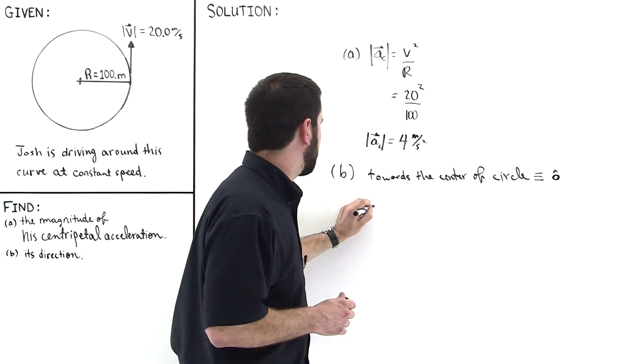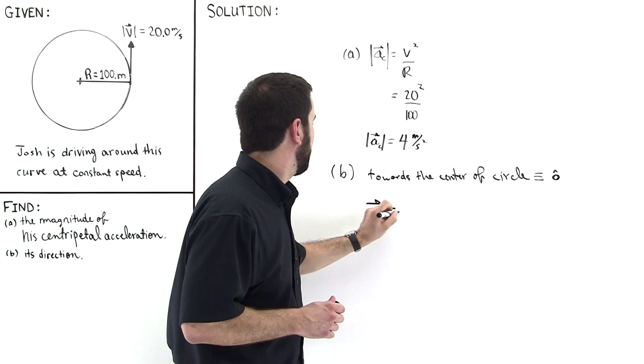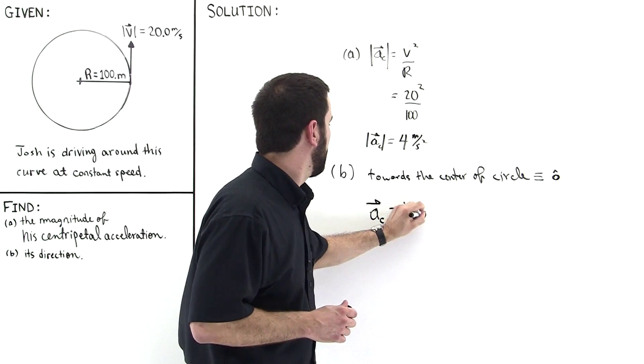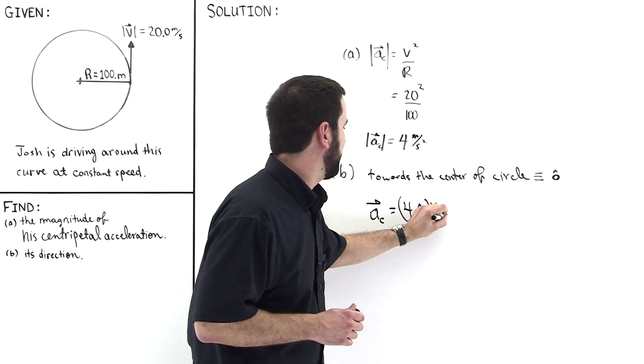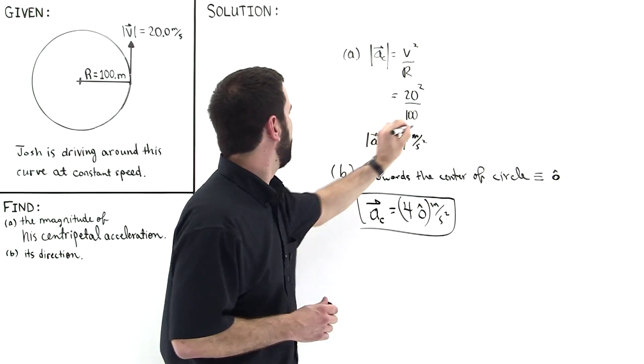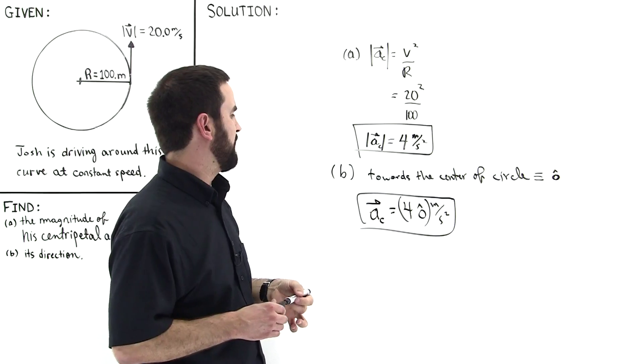So then the centripetal acceleration, as a vector, is equal to 4 o hat, and that's in meters per second squared. So this is the answer for part A, and this will be the answer for part B.